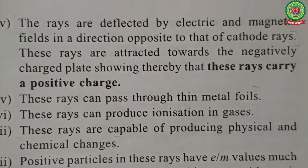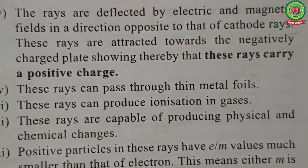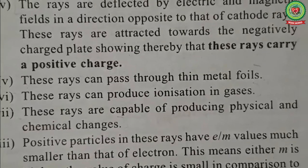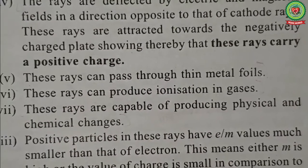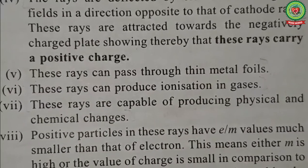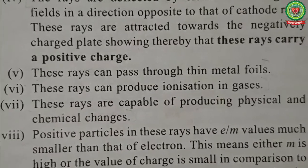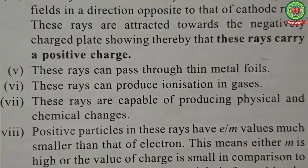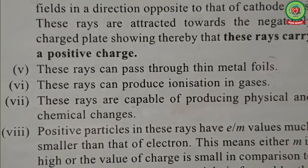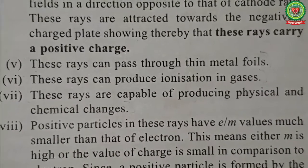The rays are deflected by electric and magnetic fields in a direction opposite to that of cathode rays. Since cathode rays deflect towards the positive terminal of the electric field, anode rays deflect towards the negative terminal, showing that they carry a positive charge. These rays can also pass through thin gold foils.